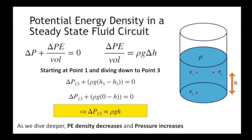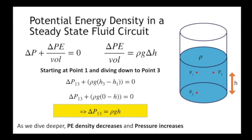As potential energy decreases — as we dive down — pressure increases. That's our first look at how the delta-P term acts as the balancer in the energy density accounting sheet. I lost some potential energy density by diving down, and it had to go somewhere — in this case, it went into pressure. The same works in reverse: going from depth back up to the surface, potential energy increases and pressure decreases. Pressure is the last piece you fill in; it's not something we can directly observe.